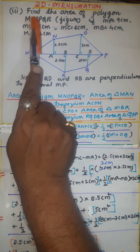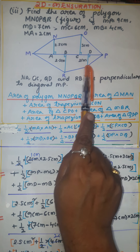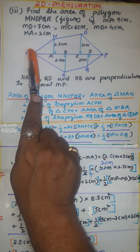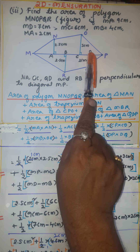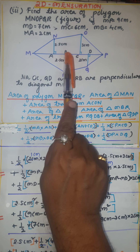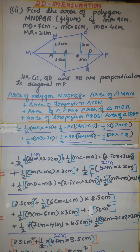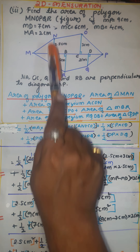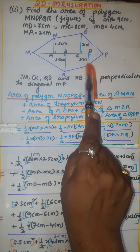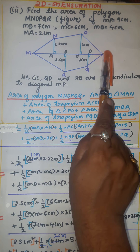Let me read out the problem. Find the area of polygon M, N, O, P, Q, R, if MP is equal to 9 centimeters, MD is equal to 7 centimeters, MC is equal to 6 centimeters, MB is equal to 4 centimeters, MA is equal to 2 centimeters. NA, OC, QD, and RB are the perpendiculars to the diagonal MP.